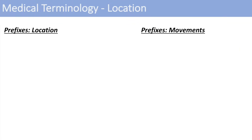For location prefixes: we've got epi, peri, and circum, and these all just mean around — around the location or around the object. Think of perimeter, circumference, or the epicenter — you're kind of around the center.